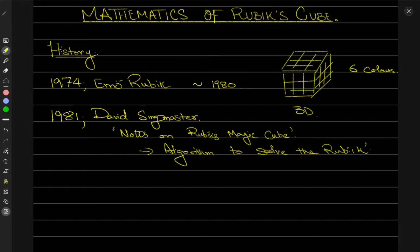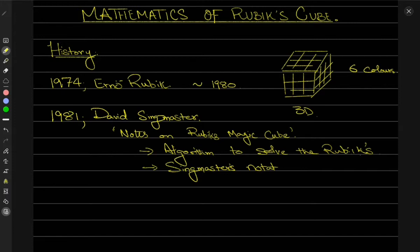He developed an algorithm that would solve the Rubik's Cube. One of the most important things in his notes was his notation, which is known as Singmaster's notation. This notation describes various rotations that you can perform on this cube, and we'll discuss those as we move along.